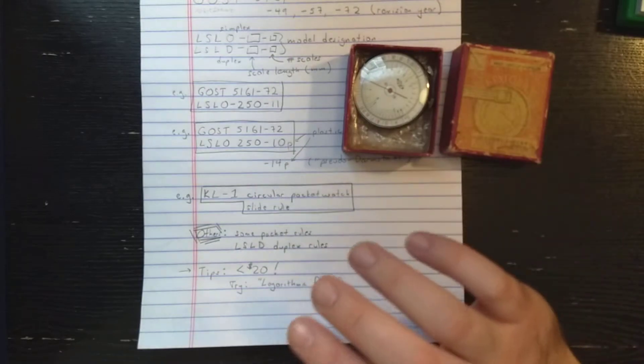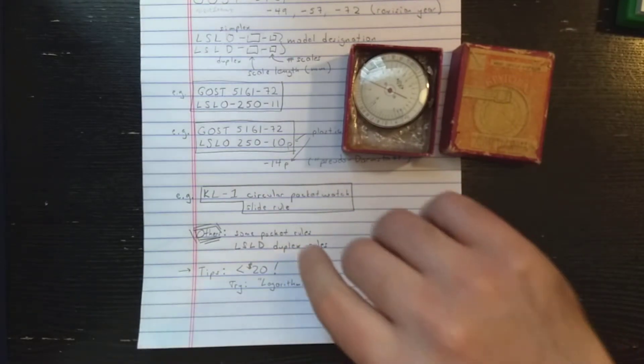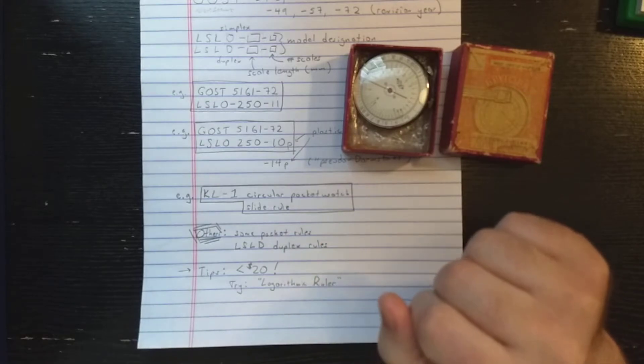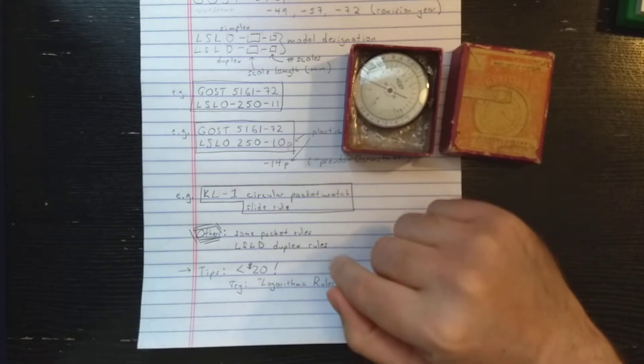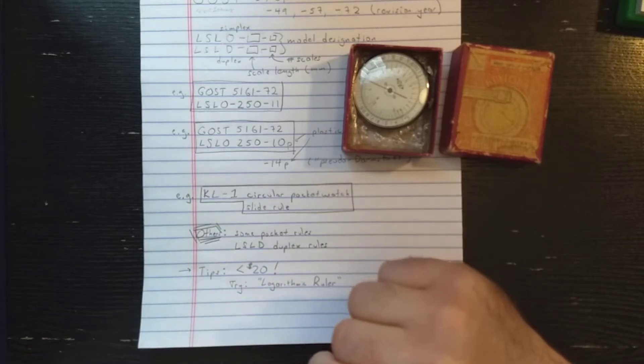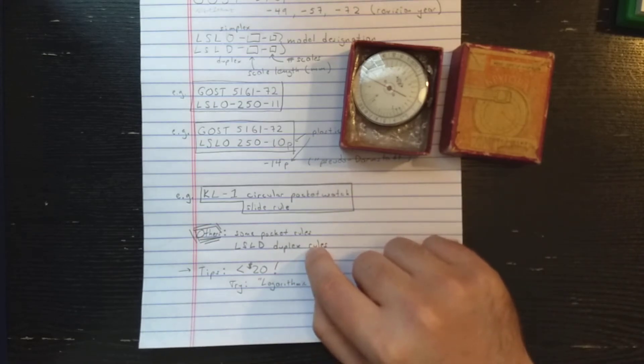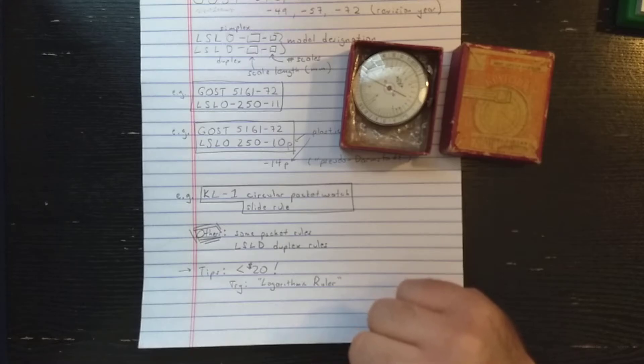A couple of other comments here. Besides these rules that you've seen, there are a few pocket slide rule designs out there, and there are some duplex rules which are marked LSLD. The duplex rules, they don't really entice me. The cursors on them seem to deteriorate, and when you're looking, you'll often see ones with very bad looking cursors or missing cursor. So I haven't tried to get any of those.